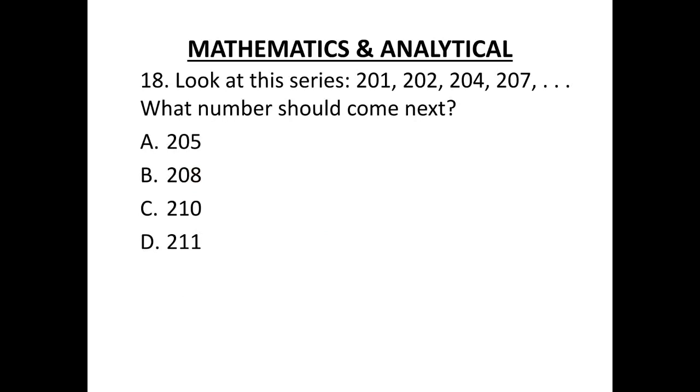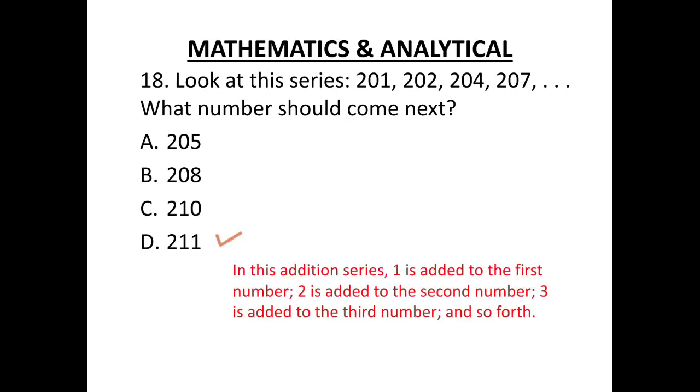Another series question. Look at the series 201, 202, 204, 207. What number should come next? The correct option is 211. The series is ascending this time. In this addition series, 1 is added to the first number, 2 is added to the second number, 3 to the third number and so forth. So 207 plus 4 equals 211.